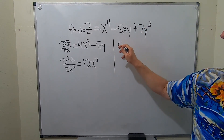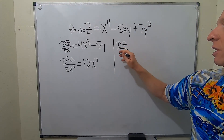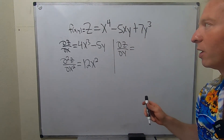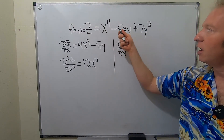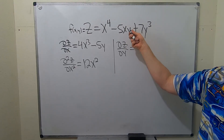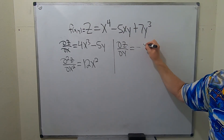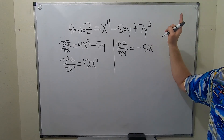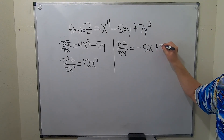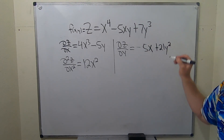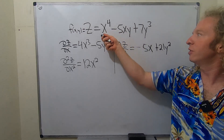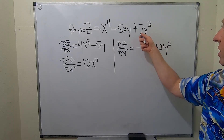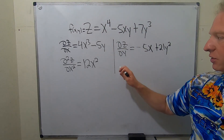Now let's go to del z del y. So del z del y — we're taking the derivative with respect to y. This will be 0. The derivative of y is 1, so we're left with negative 5x. And then taking the derivative with respect to y: 3 times 7 is 21, and then we have y squared. The derivative is 1, so we're left with negative 5x. Here we get 21y squared.